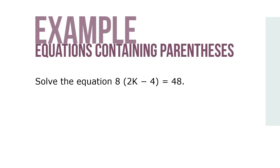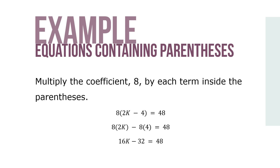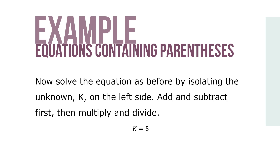Let's take a look at another example of equations containing parentheses. Because the equation contains parentheses, we must begin there. Following the rule for removing parentheses, multiply the coefficient 8 by each term inside the parentheses as you see here. Now solve the equation by isolating the unknown k on the left side — add and subtract first, then multiply and divide.